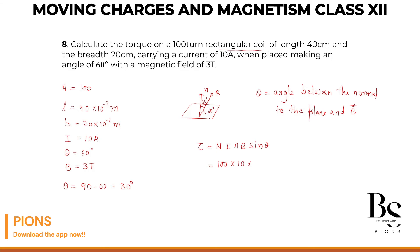So area of a rectangular coil, since they have said rectangular coil, so area of a rectangular coil is length into breadth. So it will be 40 into 10 raised to minus 2 into breadth 20 into 10 raised to minus 2, length into breadth, into magnetic field which is 3 and sine 30. Sine 30 is half.